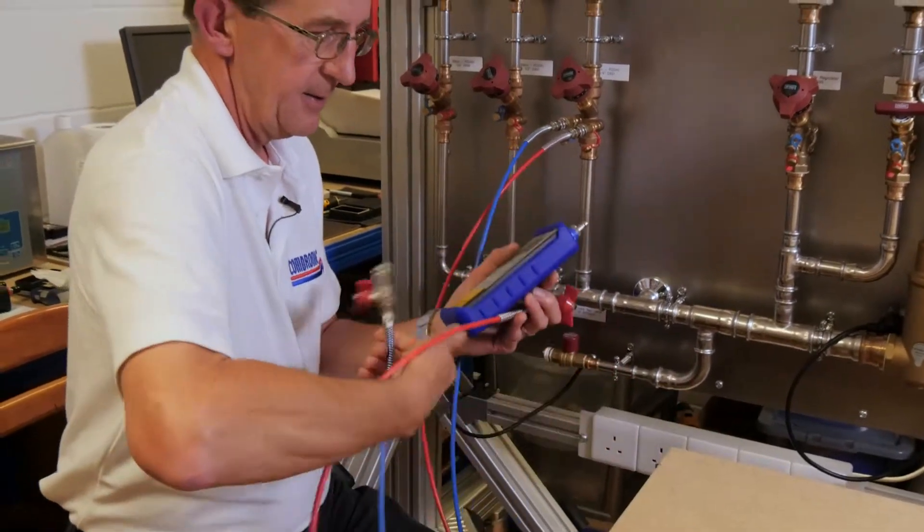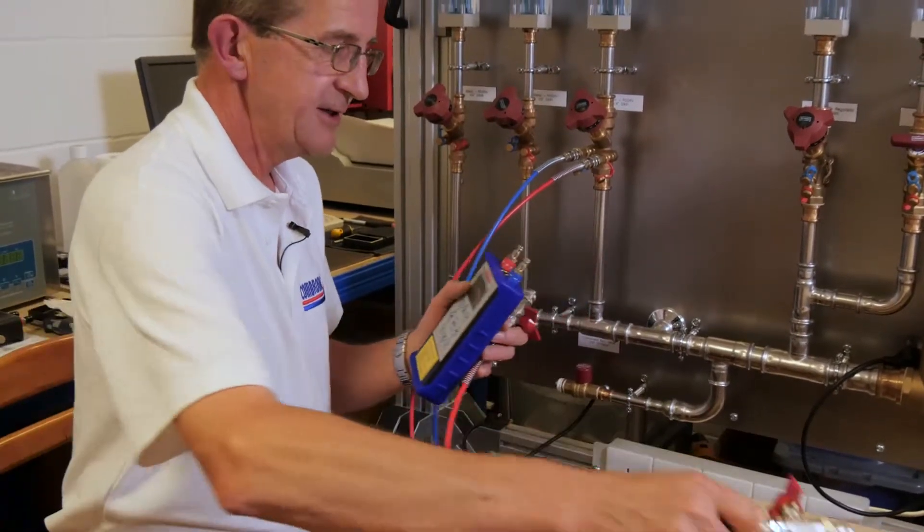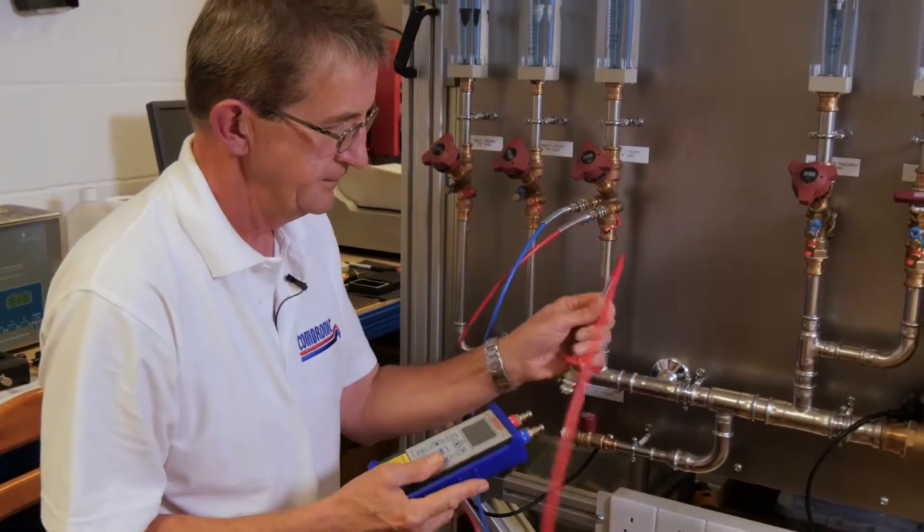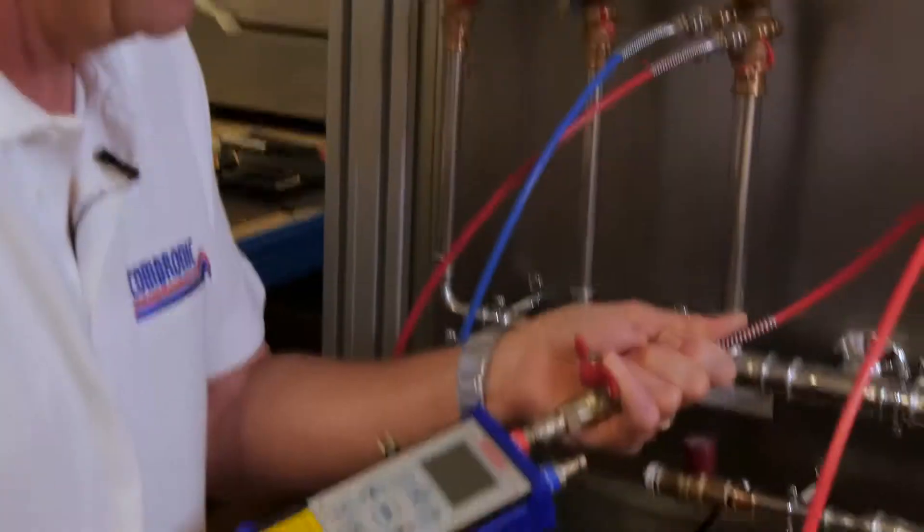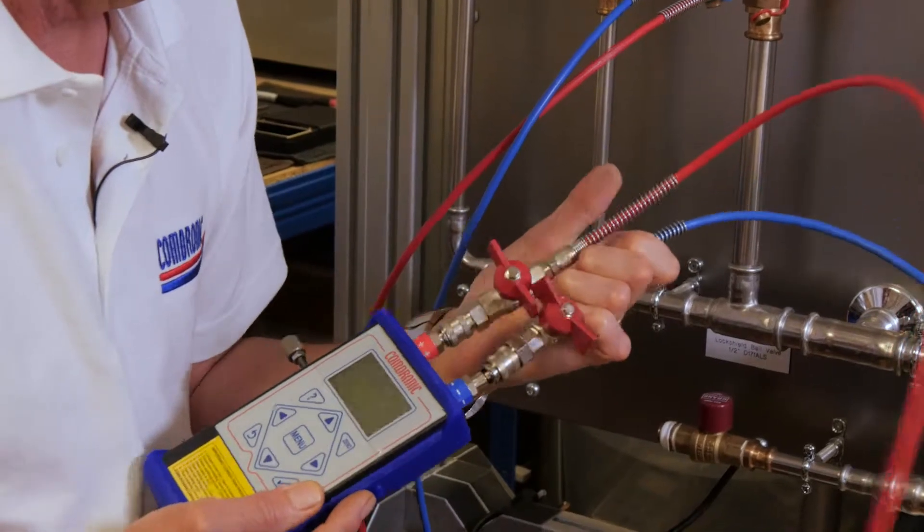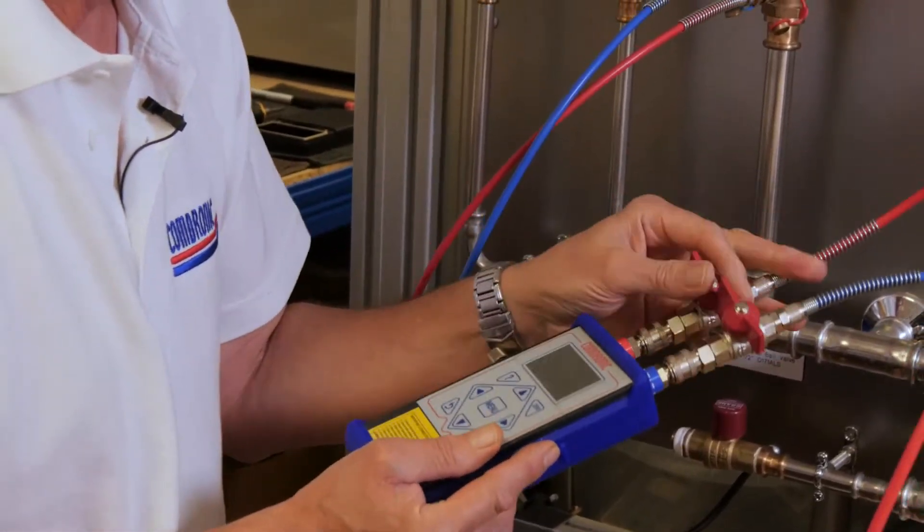So if we take the red hose first and connect it to the high pressure port. And then the blue hose and connect it to the low pressure port. And we're ready to go.